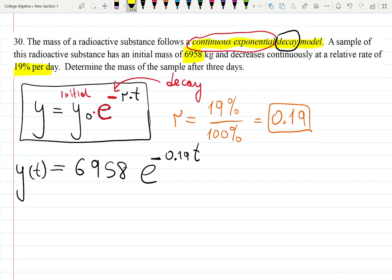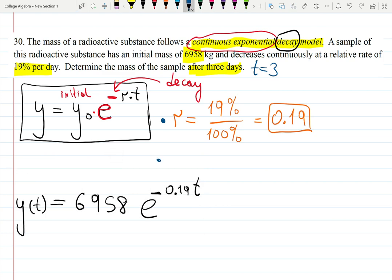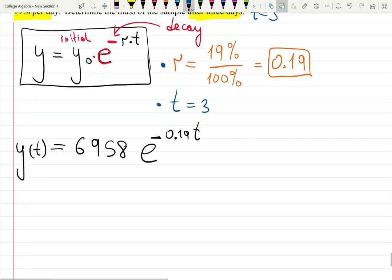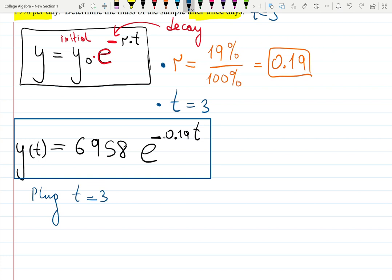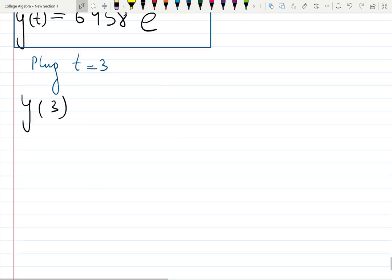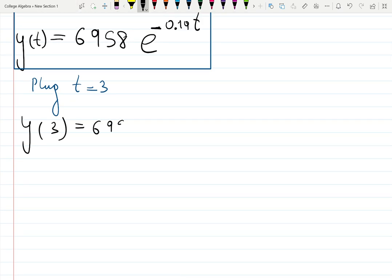A sample of the radioactive substance has initial mass, so this is my initial, of 6958 kilograms. It decreases continuously at a relative rate of 19% per day. The rate r is 19% all over 100%, always do that, divide by 100, equals 0.19. That's my r. I'm going to put e, since it says exponential decay I will put negative sign, then 0.19 where my r is, and then t. Find the mass of the sample after three days. They want me to plug t equals three. My y at three will be 6958e to the minus 0.19 times three. Grab your calculator and calculate. 3934.9 in a unit kilograms. That's the answer.